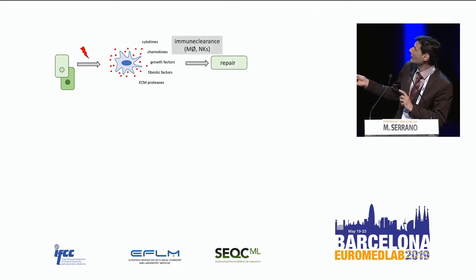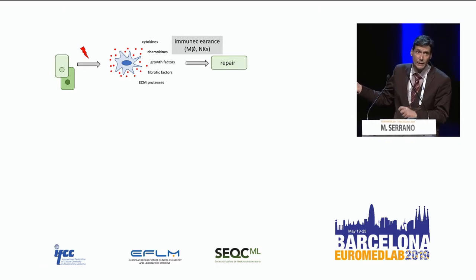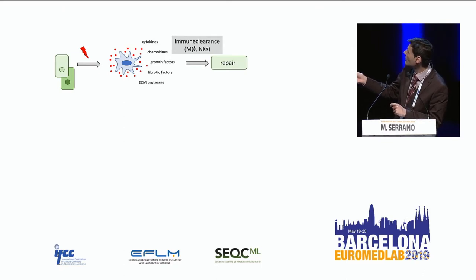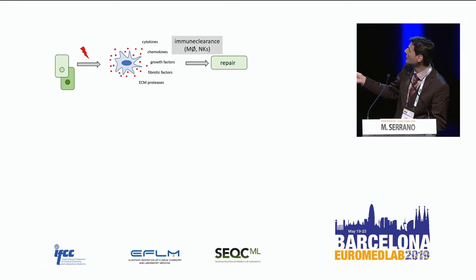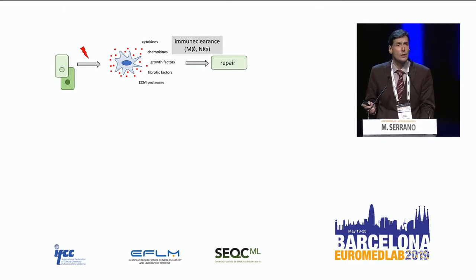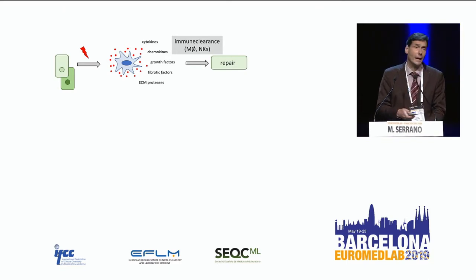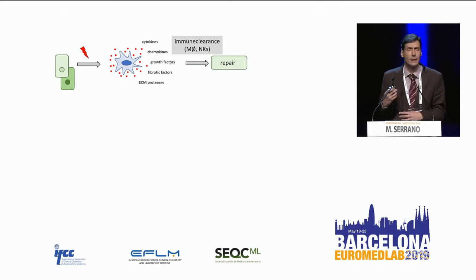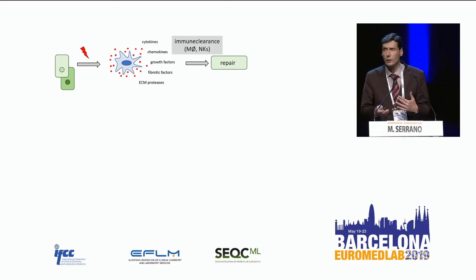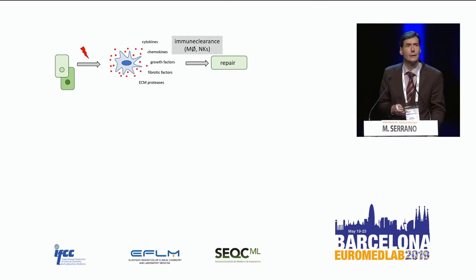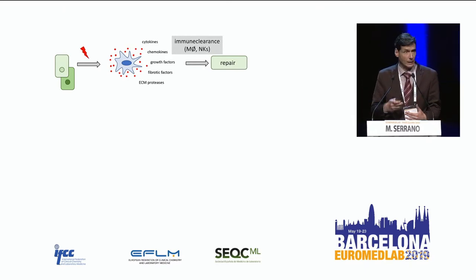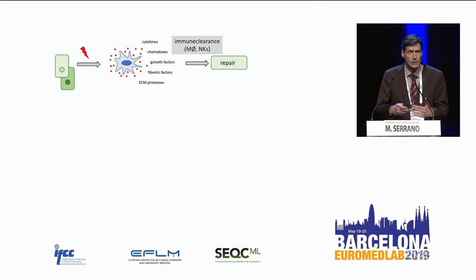If this repair is successful, these dysfunctional senescent cells have to be eliminated. They are eliminated by macrophages and natural killer cells, and perhaps other cells. This is the successful repair process. When we are young or under normal conditions, senescent cells are appearing constantly — when we have an infection, when exposed to toxics, or due to accidents — and they are eliminated. This is a constant process of repair.